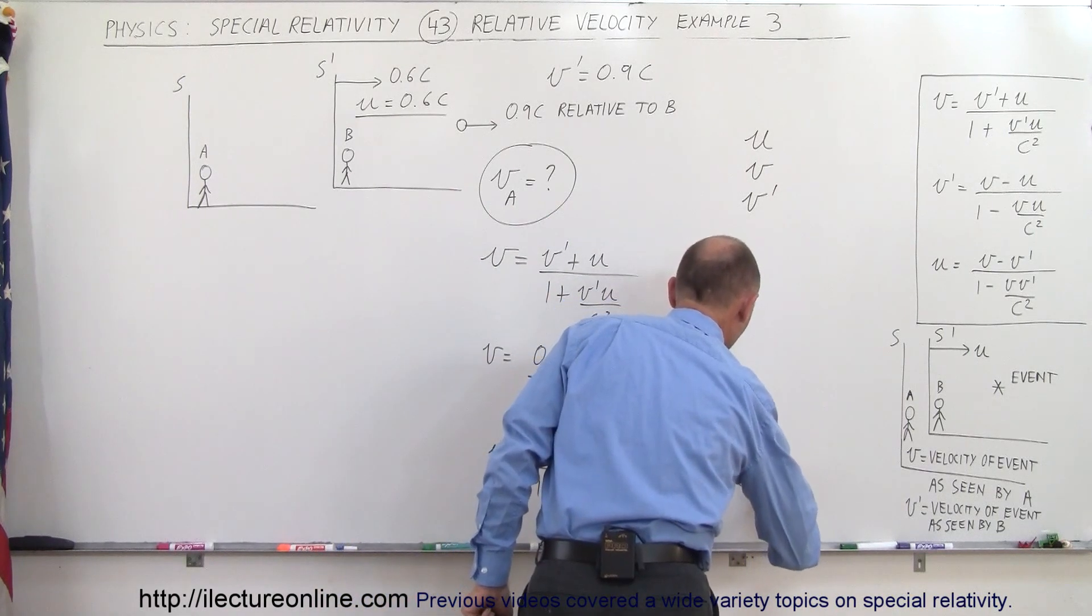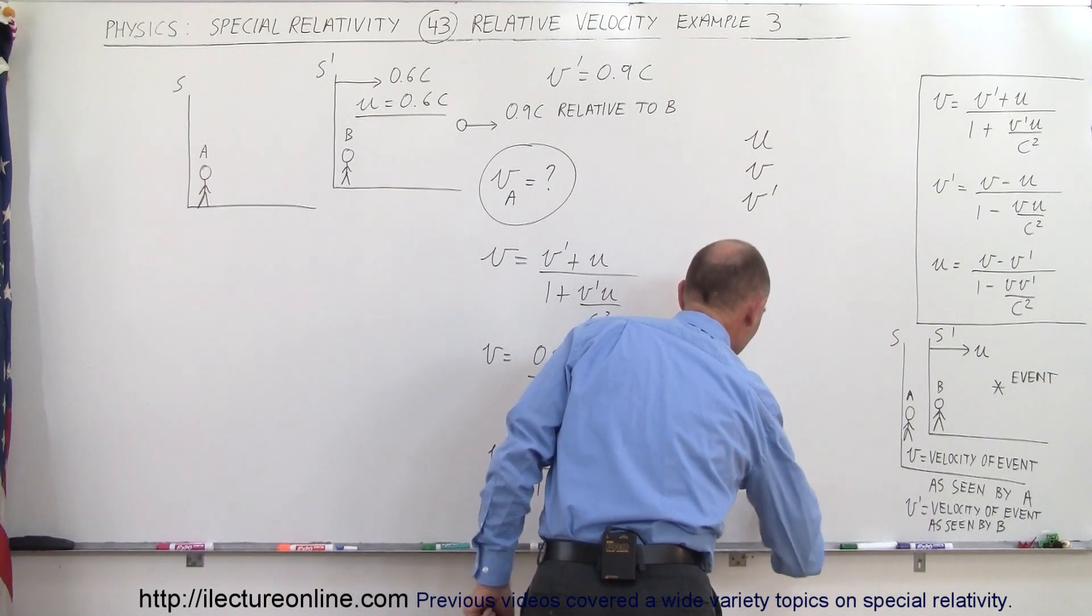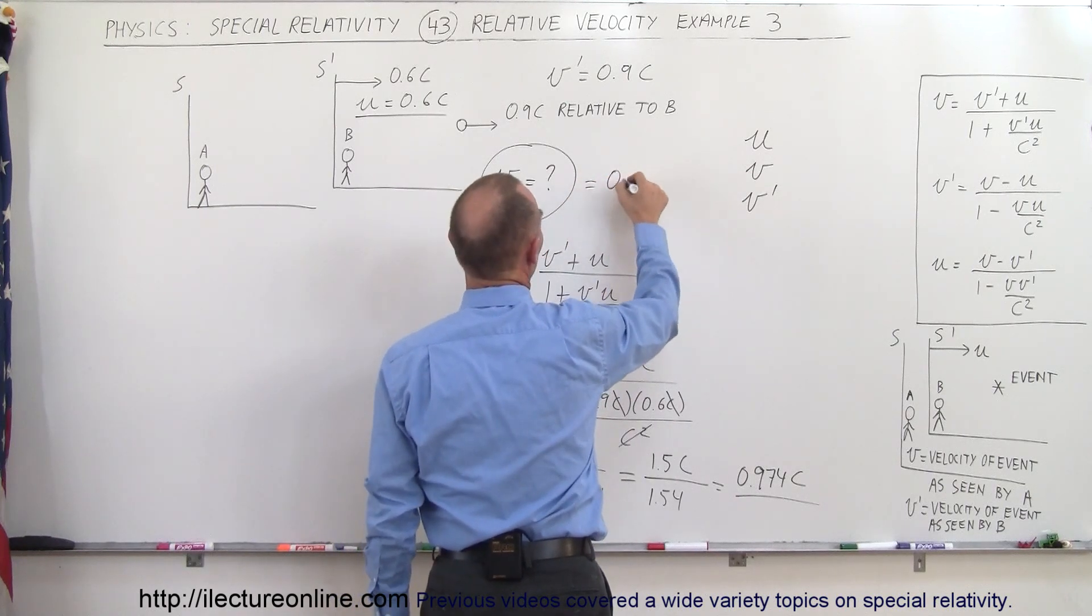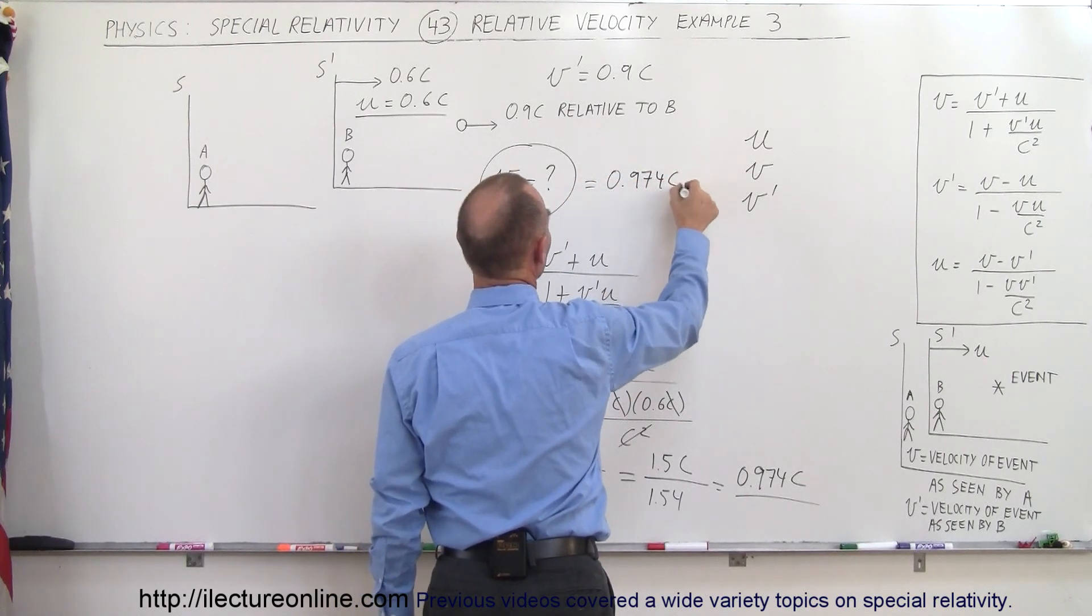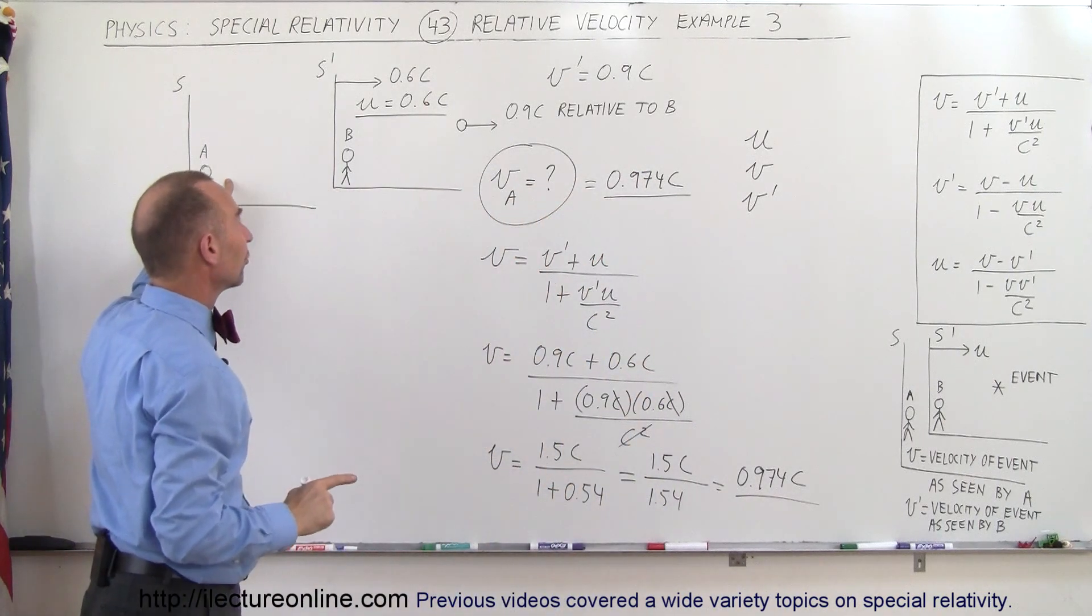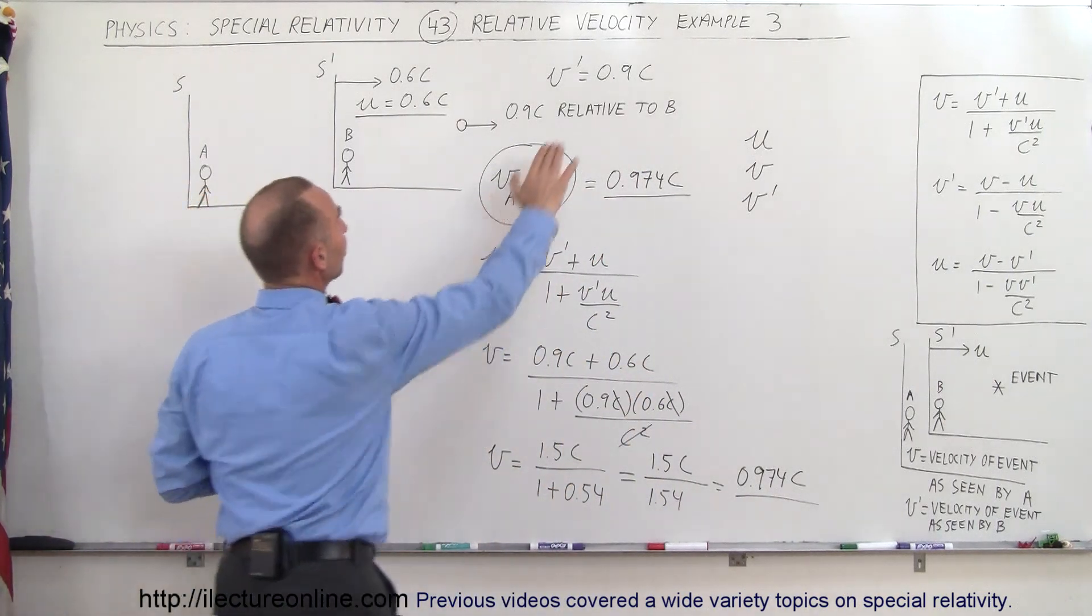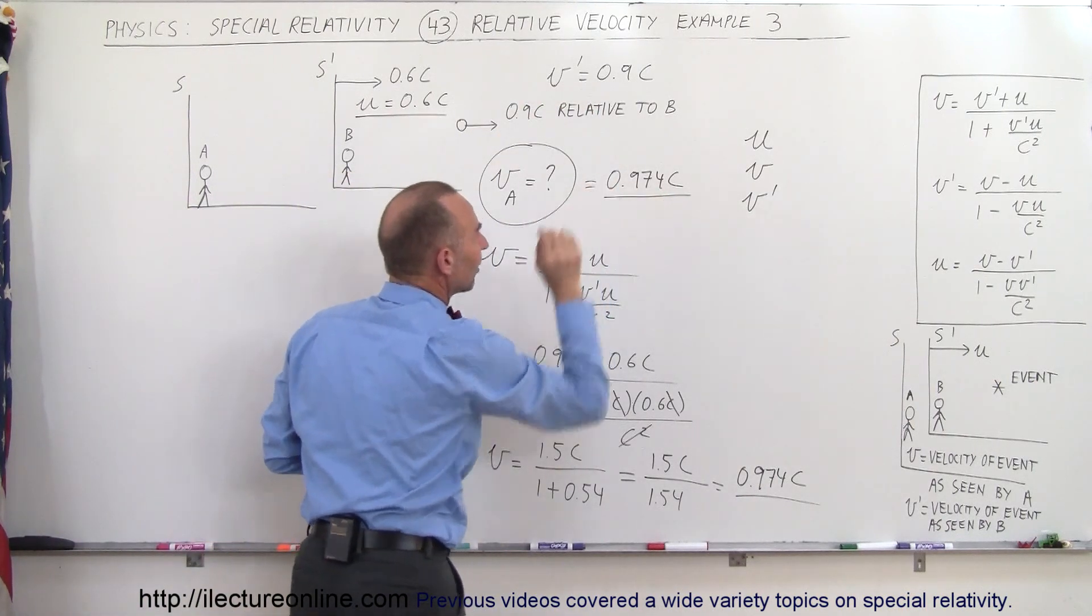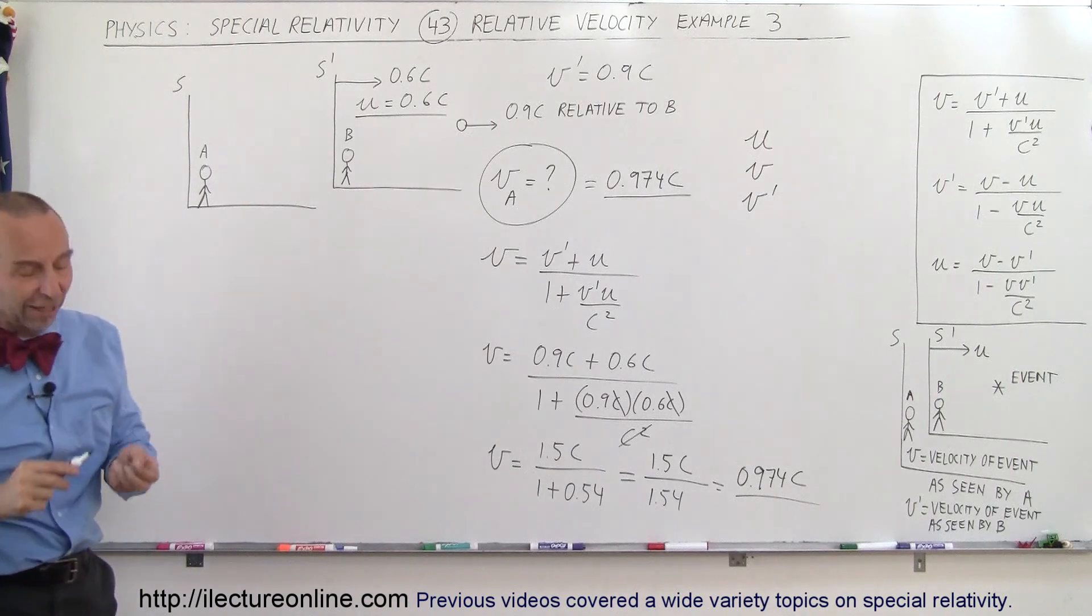So 0.974C, and that is the velocity of the event as seen by the stationary observer. It would be faster than as seen by the moving observer, but it can never be greater than C, and that makes sense when we see the result. And that's how we do that.